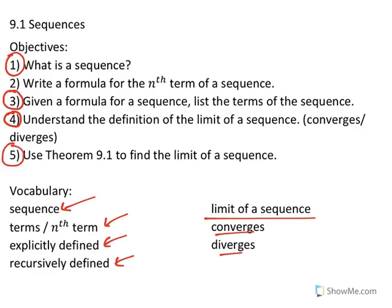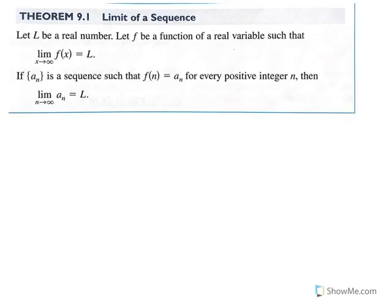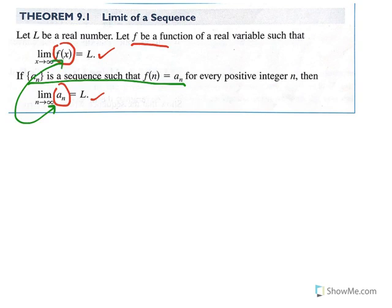We'd now like to look at Theorem 9.1, which helps us find the limit of a sequence by tying back to limits of real-valued functions from Calculus AB. This theorem states that if you have a sequence and the corresponding real-valued function with the same rule, and the limit of that real-valued function exists and equals L, then the limit of the sequence must also equal L. The condition is that f(n) equals the nth term of the sequence for every positive integer n.